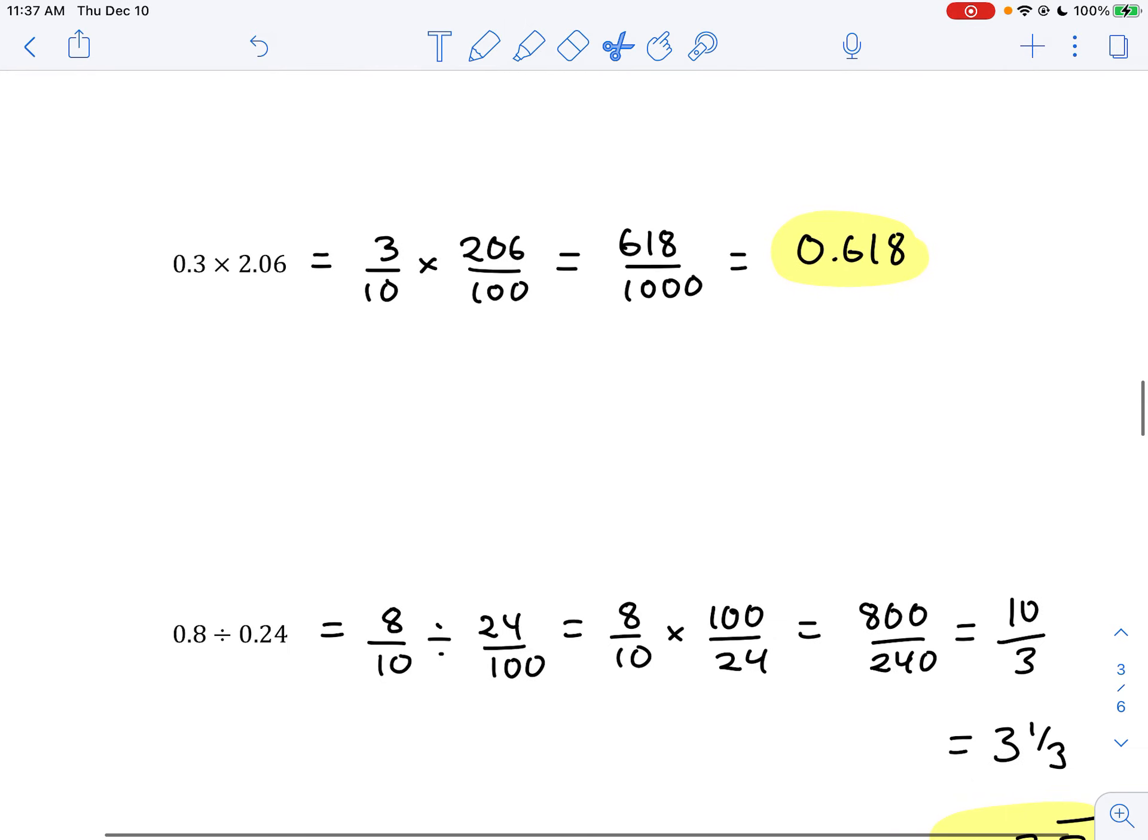A big issue, a common issue I saw with students on multiplication and division was even after they converted the decimals to fractions, they felt the need to get a common denominator. So they changed this to 31 hundredths. Well, with multiplication and division, you don't need to worry about common denominators. You can just multiply the numerators and get 6, 18, and multiply the denominators even though they're different, and just get 1,000. And then converting that to a decimal was pretty straightforward.